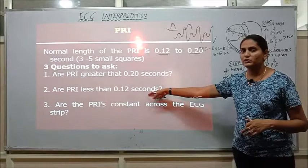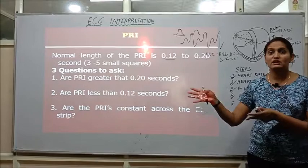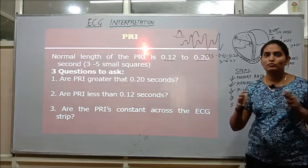Third question is are the PR intervals constant across the ECG strip? Again, as in case of P wave we have said that the P wave should all look similar across the ECG. Again in case of PR intervals, they have to be equal throughout the ECG to say that it is a regular rhythm ECG.